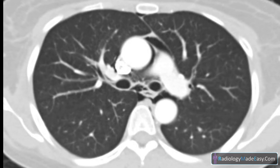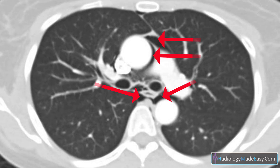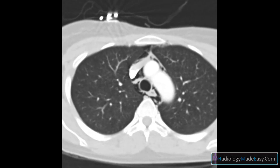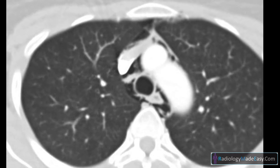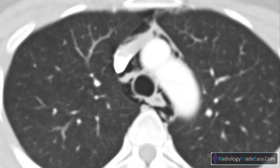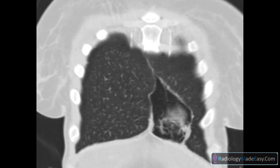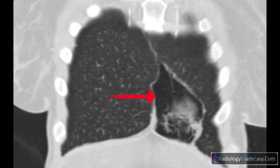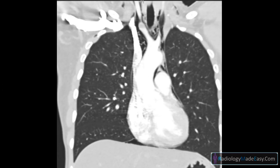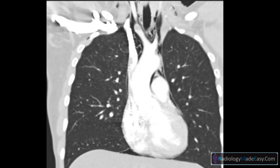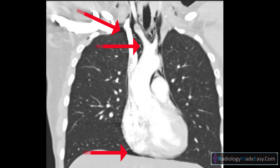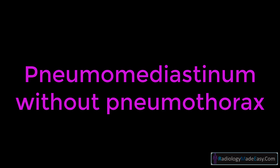Here you can see an extensive amount of air in the mediastinum outlining the thymus, the esophagus, and also around the SVC. The diagnosis is pneumomediastinum without pneumothorax.